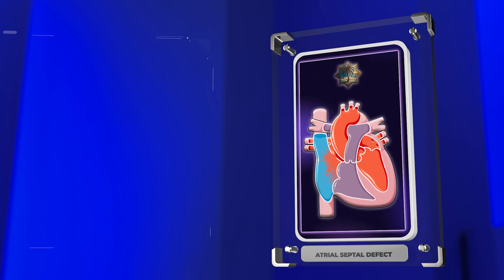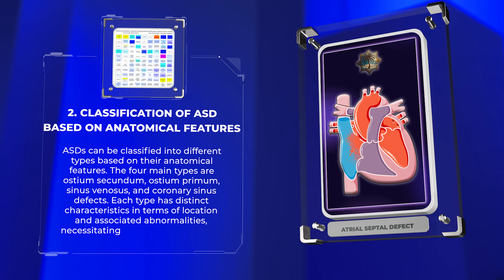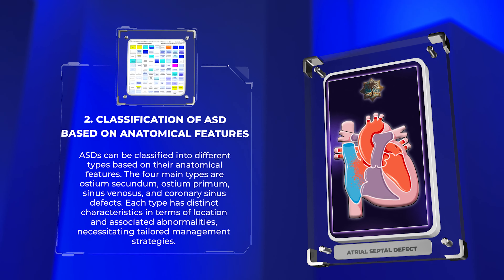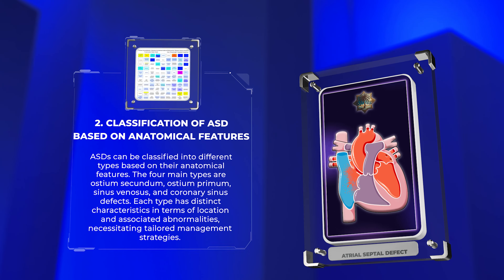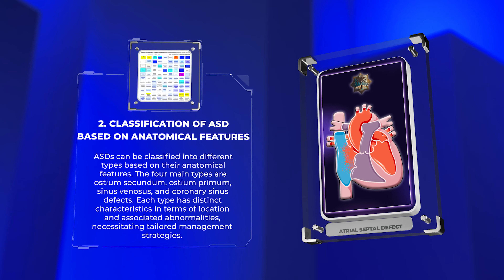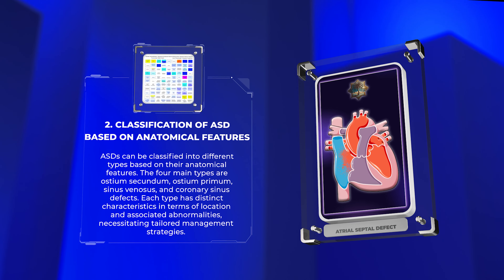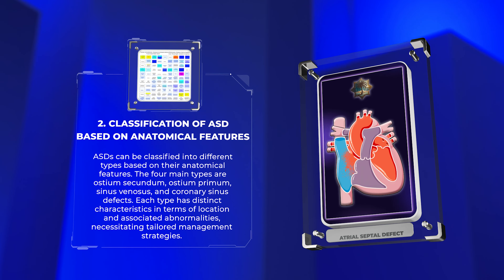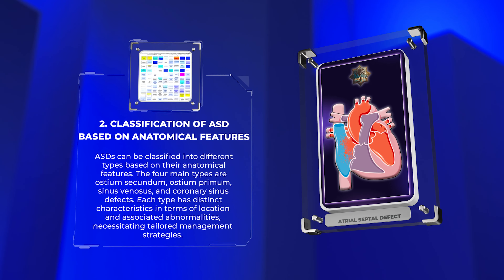ASDs can be classified into different types based on their anatomical features. The four main types are ostium secundum, ostium primum, sinus venosus, and coronary sinus defects. Each type has distinct characteristics in terms of location and associated abnormalities, necessitating tailored management strategies.